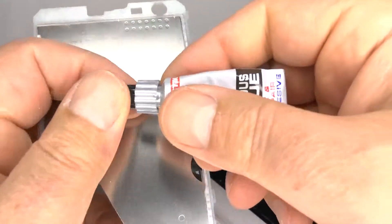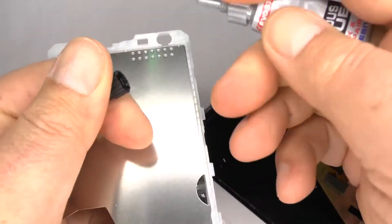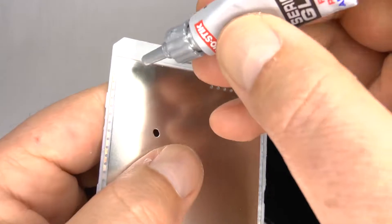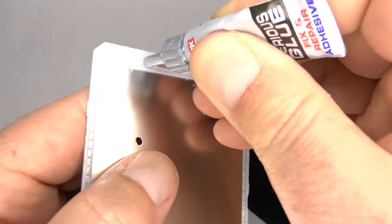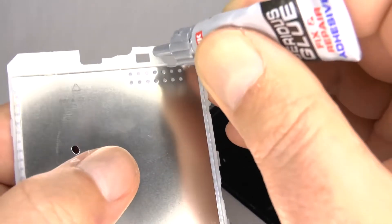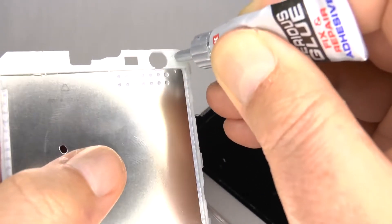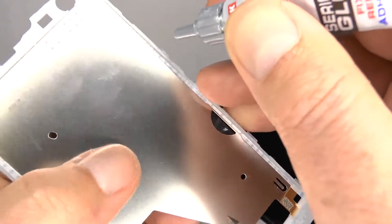Now apply some fresh adhesive. Here I'm using EVO Stick Serious Glue. This is excellent for this type of repair as it's very strong and flexible, and it will let you remove the screen in the future and use the frame again.